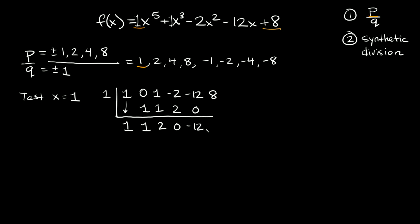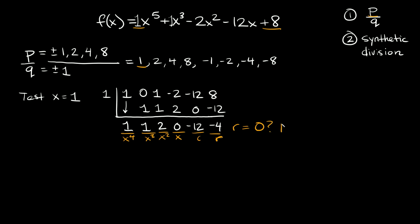So then 8 minus 12 gives us negative 4. Now I realize I made a mistake from the beginning — instead of plus 8, the polynomial should actually have minus 8. That doesn't change much except this last step: minus 8 minus 12 would have been negative 20, still not 0. The main thing you want to look for is whether your remainder equals 0. Here we have negative 4, so x is equal to 1 is not a solution.